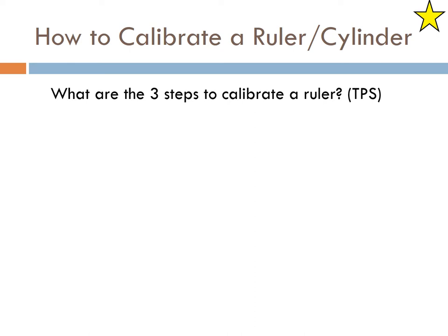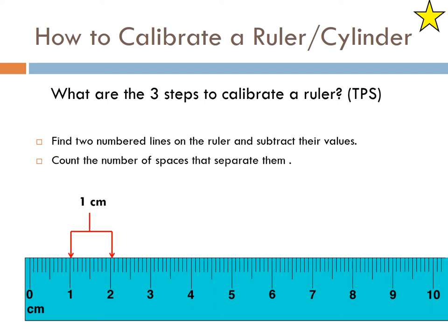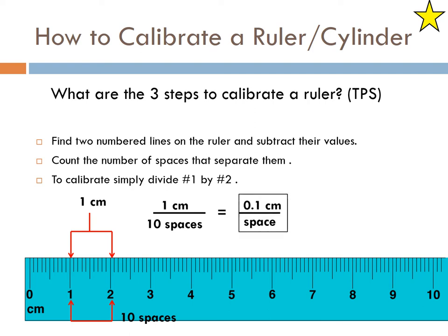So how do we get 9.4, 9.5 from that? That's from calibrating a ruler or a cylinder. There's three steps to calibrate a ruler. One, you find two numbered lines on the ruler and subtract the values. So let's do 2 and 1. The difference between 2 and 1 is 1 centimeter. Step 2, count the number of spaces between those numbers. There are 10 spaces between 1 and 2. And number 3 is to divide 1 by 2. So you take 1 divided by 10, 1 centimeter per 10 spaces, and you get 0.1 centimeters per space. That means each of those spaces is worth 0.1 centimeters.